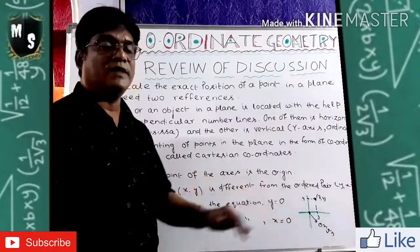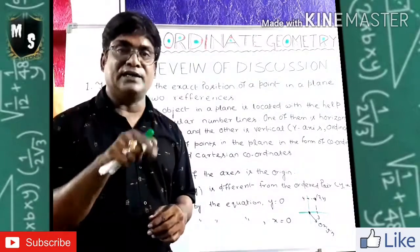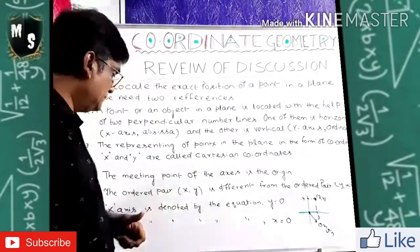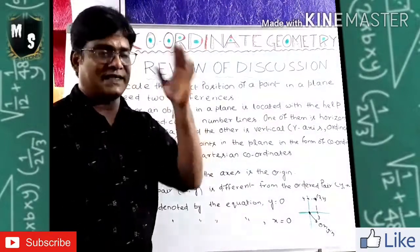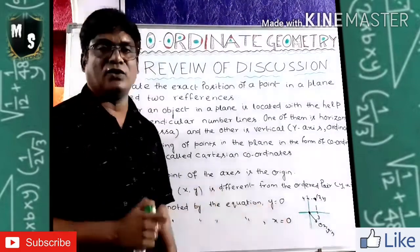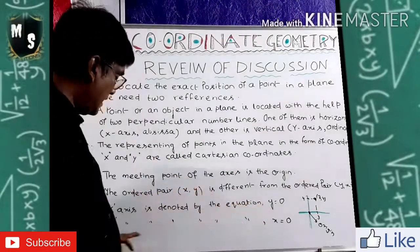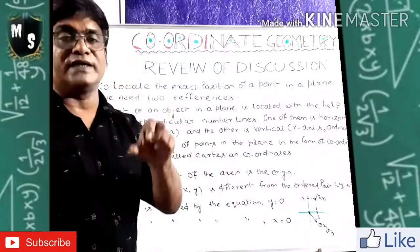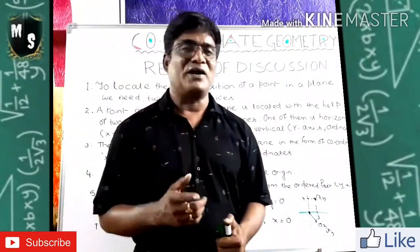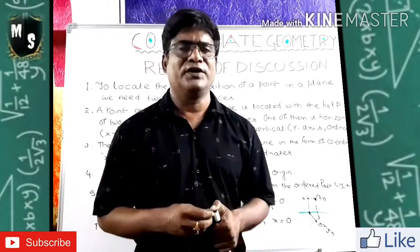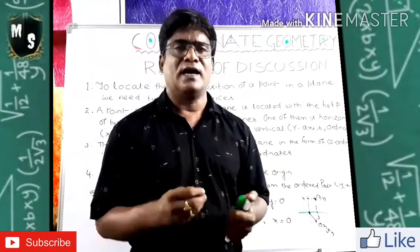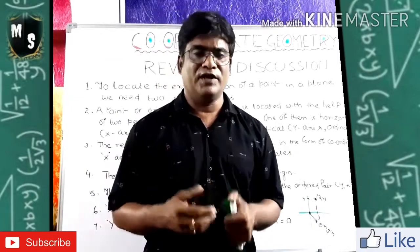The meeting point of the X-axis and Y-axis where they intersect is called the origin, with coordinate (0, 0). The ordered pair (X, Y) is different from (Y, X). A point is on the X-axis when Y = 0, and on the Y-axis when X = 0. I hope you understood this review. This is a very easy chapter — practice on graph paper, plot coordinate pairs, and you can master it. Thank you very much, take care of yourself.